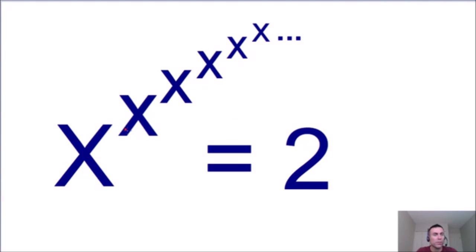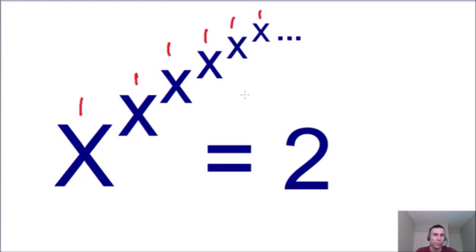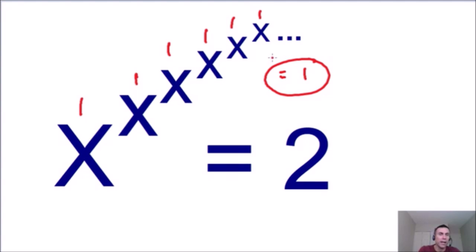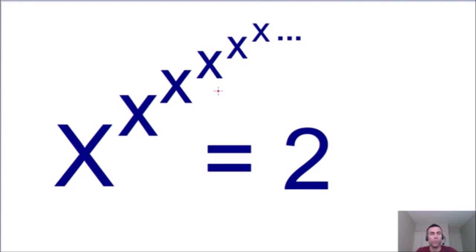Let's see what happens if we plug in a value of 1 for x. This one you can do in your head — you don't even need a calculator. Anything raised to a 1 exponent is equal to 1, so the entire tower is going to equal 1. So once again, we found a number we can plug in for x that goes on forever but equals the finite value of 1.